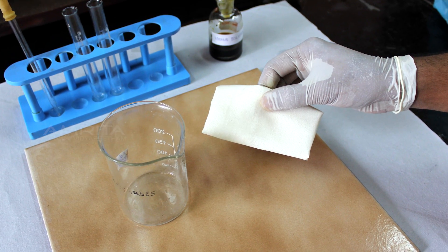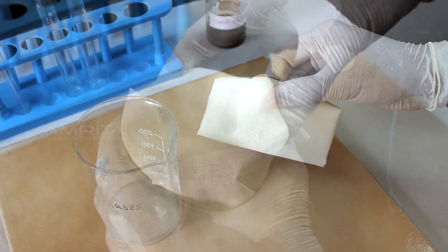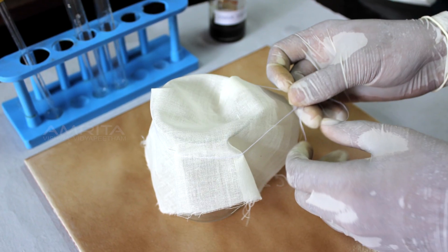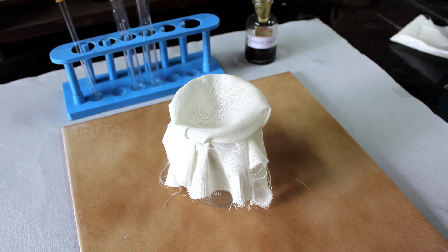Now, take a beaker and a muslin cloth. Cover the mouth of the beaker with the muslin cloth. Secure the muslin cloth by using a thread tied around the beaker.